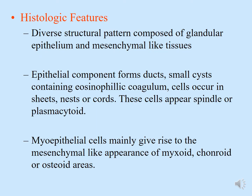Looking at histopathological features of pleomorphic adenoma: the epithelial and myoepithelial cells differentiate into various epithelial and mesenchymal components, giving diverse structural patterns composed of glandular epithelium and mesenchymal-like tissues. The epithelial component shows whorls of ducts, small cysts containing eosinophilic coagulum, and cells occurring in sheets, nests, or pods. These cells appear spindle or plasmacytoid (plasma cell-like). Myoepithelial cells give rise to mesenchymal components with a myxoid, chondroid, or osteoid appearance.